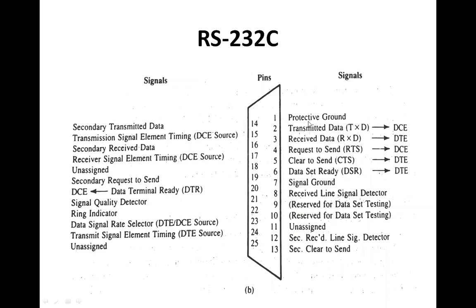The protective ground connects the cases of the devices together to prevent static buildup. In the IBM communication cable adapter, this pin is connected to the cable shield.